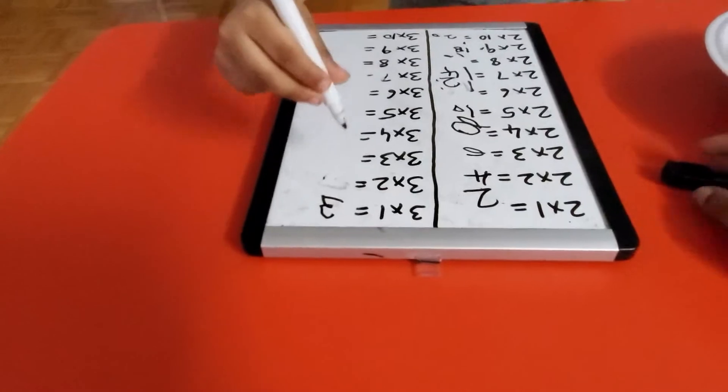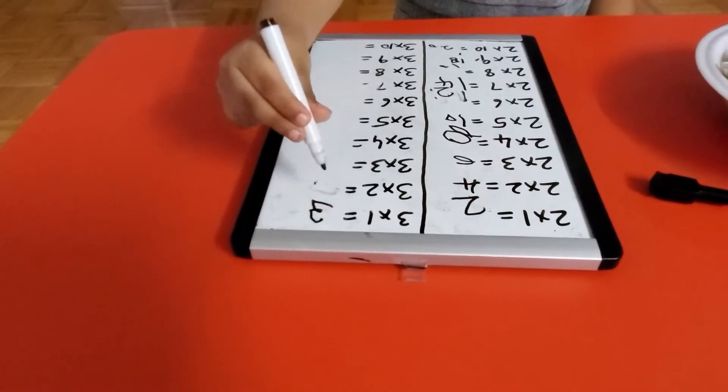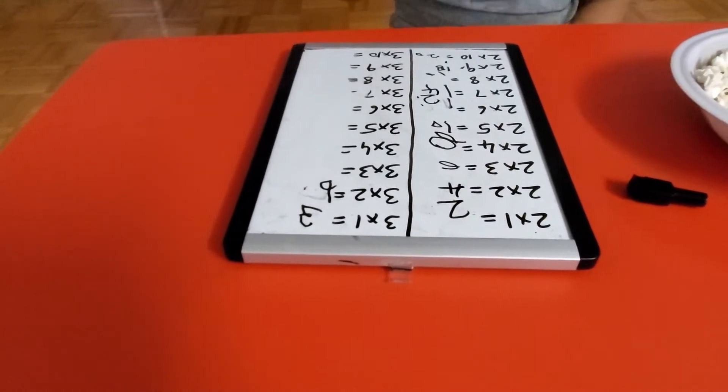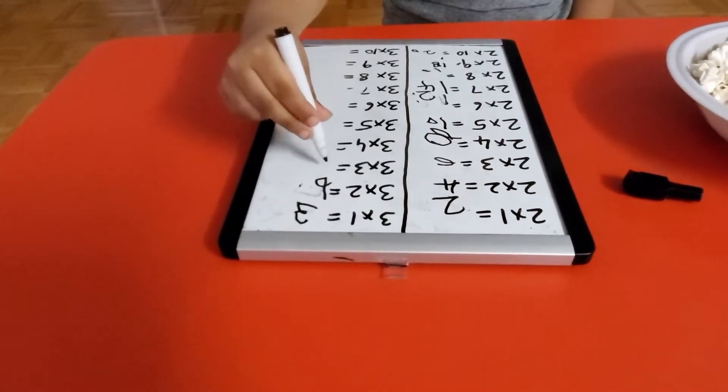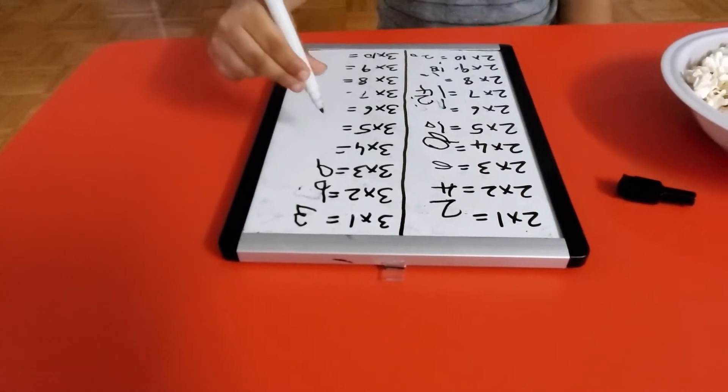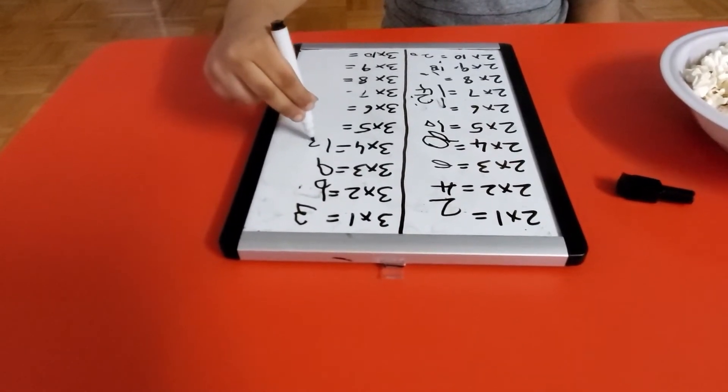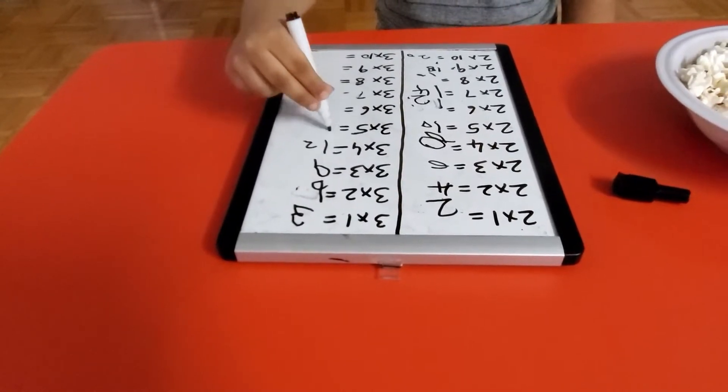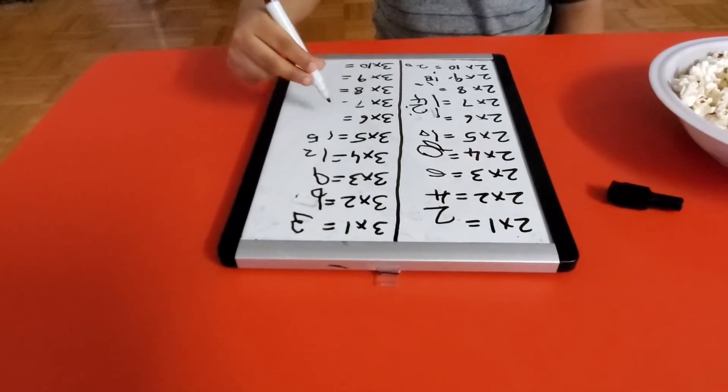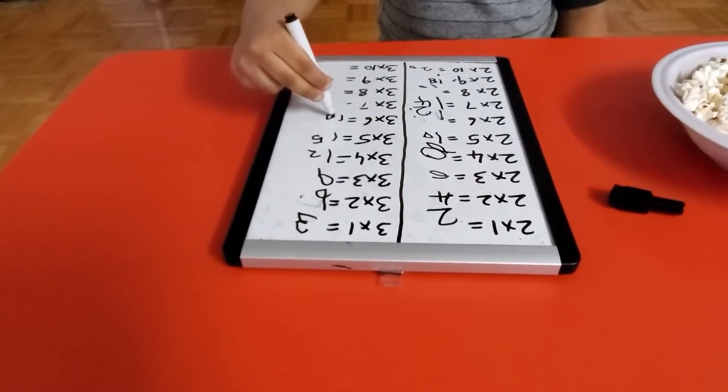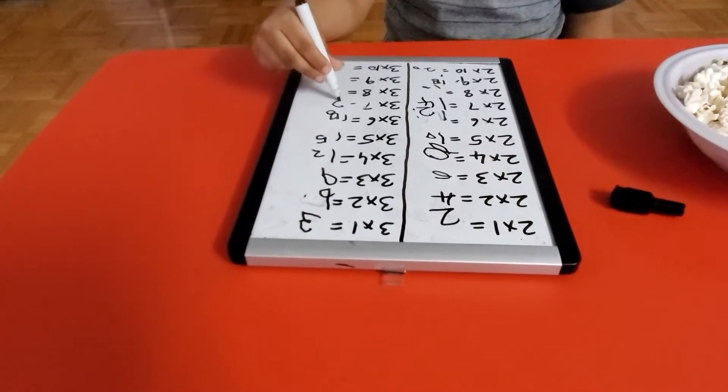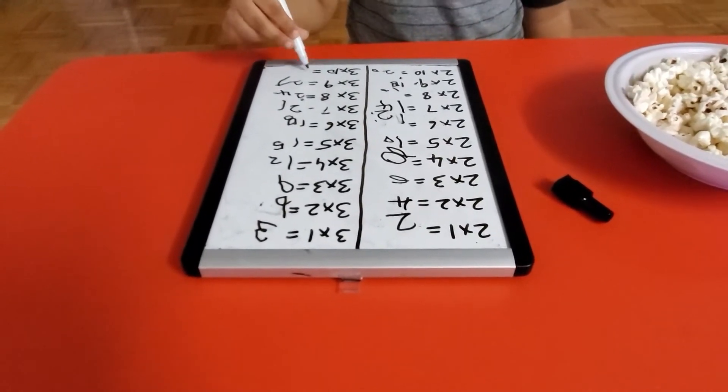Three times one equals three. Three times two equals six. Very good. Three times three equals nine. Very good. Three times four equals twelve. Amazing. Three times five equals fifteen. Very good. Three times six equals eighteen. Super cool. Three times seven equals twenty-one. Three times ten equals thirty. Super cool.